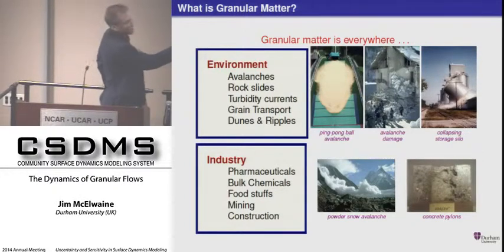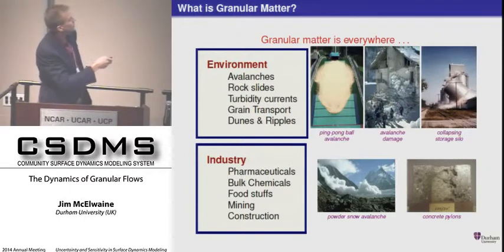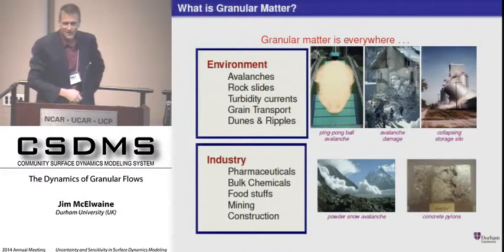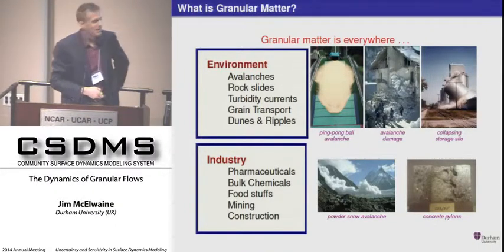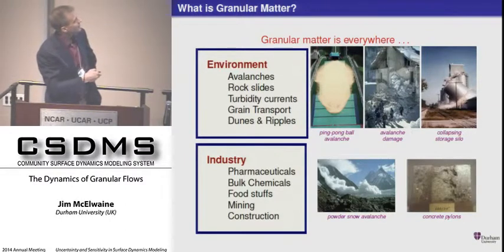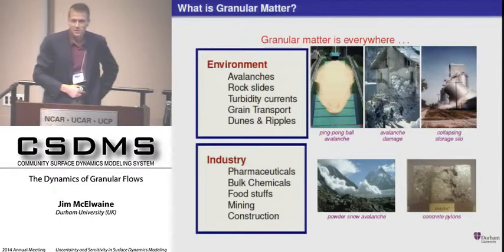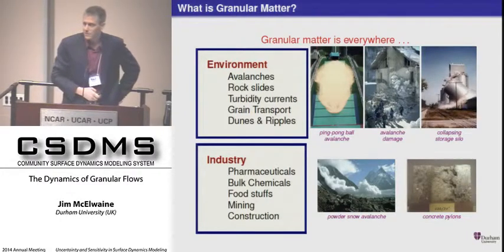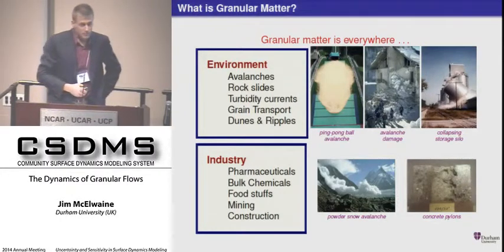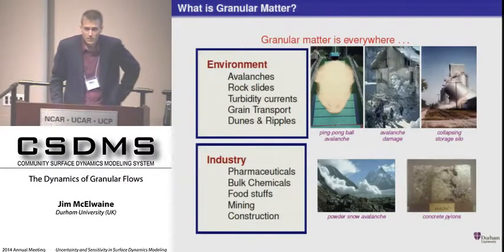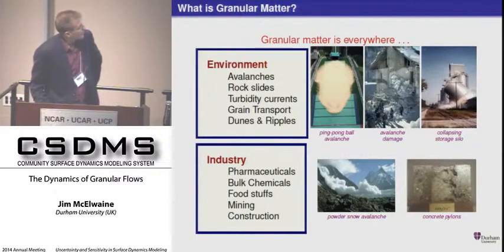This is not a natural granular flow, but this is a ping-pong ball avalanche in Japan — 650,000 ping-pong balls designed to test the interaction of grains with a fluid. And here we see what happens to a building if it gets hit by an avalanche. An avalanche is, of course, a granular flow — it's grains of snow. It may behave like a dry granular flow, but the big powder snow avalanches are a two-phase mixture.